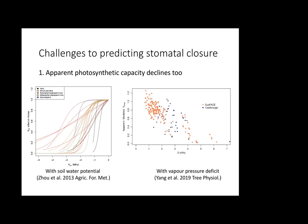There are challenges to predicting stomatal closure even with these new models. One is that apparent photosynthetic capacity declines as well — it's not just stomatal closure. VCmax also declines with soil water potential, which is very clear in every dataset we've looked at. PhD student Jinyan Yang found there also seems to be an impact of high VPD on apparent VCmax. As far as I'm aware, the work by Roddy, Jewer, and Anarchy Makala is still probably the only model that takes that effect into account.